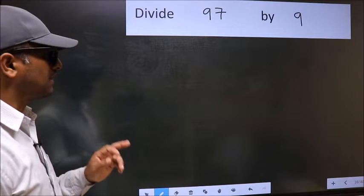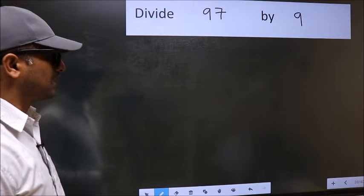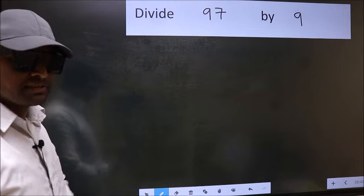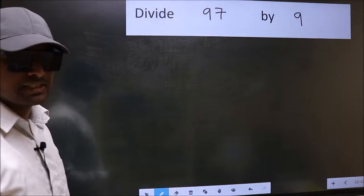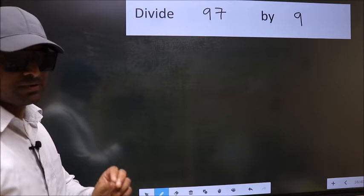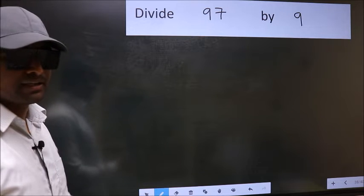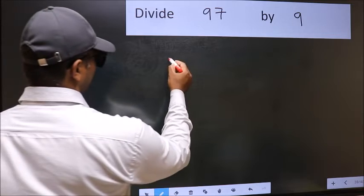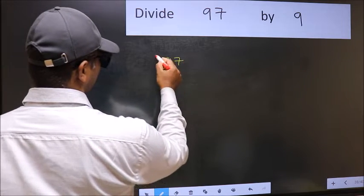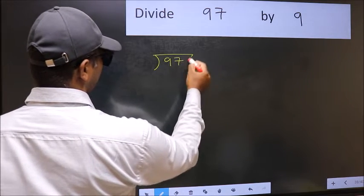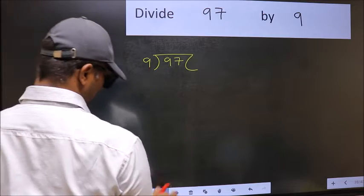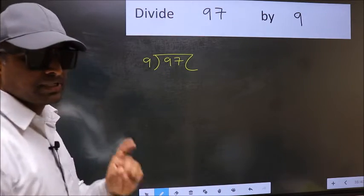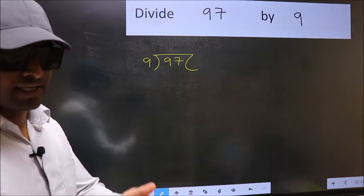Divide 97 by 9. While doing this division, many do this mistake. What is the mistake that they do? I will let you know. But before that, we should frame it in this way: 97 and 9 here. This is your step 1.